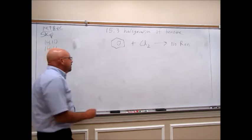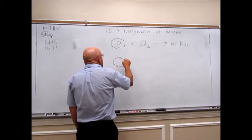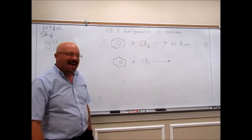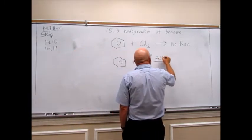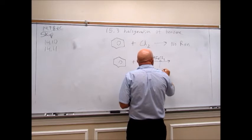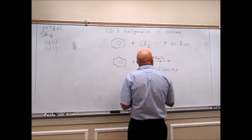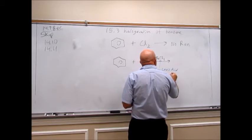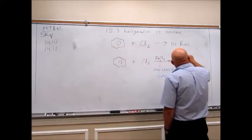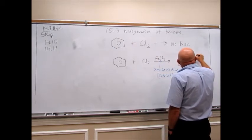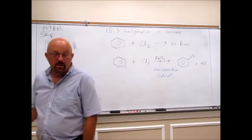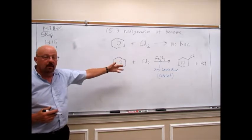However, if we take benzene and chlorine and throw in a Lewis acid catalyst — something like iron chloride, or any Lewis acid catalyst — acting just as a catalyst, we will get substitution onto the ring. We get a chlorine on the ring and HCl as a byproduct. We are substituting one of the hydrogens of the ring with a chlorine.